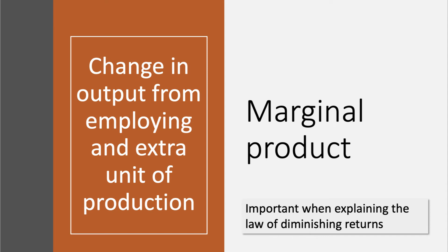Marginal Product involves the change in Total Output that comes from employing an extra unit of production, in particular adding an extra unit of labour. Marginal Product is important when explaining the law of diminishing returns.